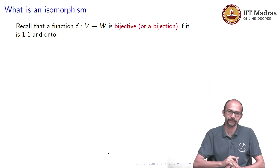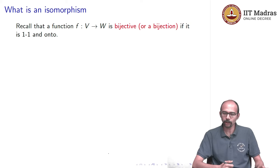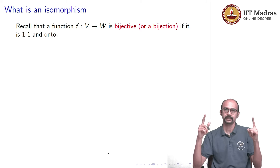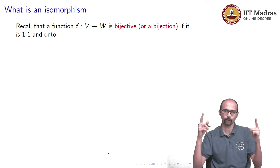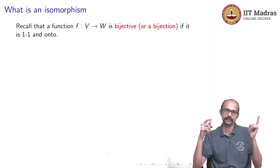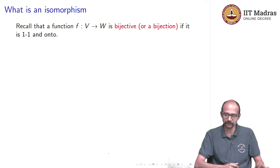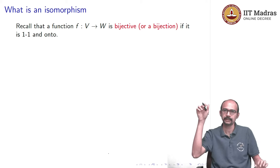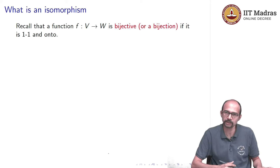Now let us get to what is an isomorphism. Recall that a function f from V to W is called a bijection if it is one-to-one and onto — sometimes called a one-to-one correspondence. Equivalently, for each w in W there exists a unique v in V such that f(v) = w, meaning elements of V and W can be perfectly paired up.